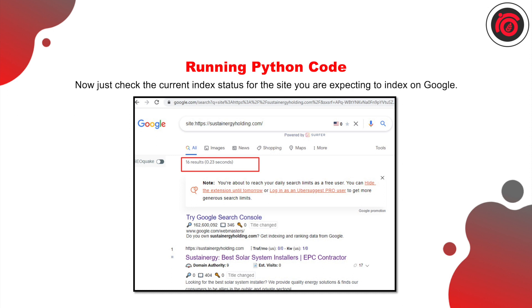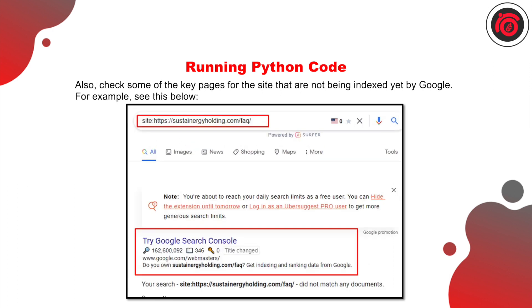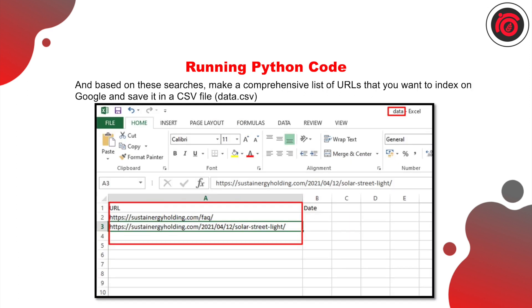Keep note of that number and check some of the key pages you want to index. In the Python code, you need to list all the pages you want indexed. If you have a new website, run a crawl in Screaming Frog and export all the URLs from there to index them in bulk. Or, if you've just published three or four new blogs, simply copy the URLs of those blogs into a spreadsheet.